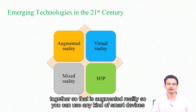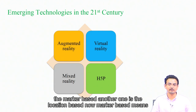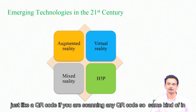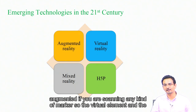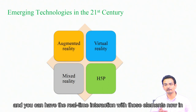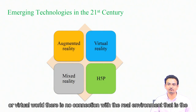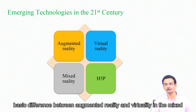You can use any kind of smart device for augmented reality. Augmented reality is basically of two types: one is marker-based and another one is location-based. Marker-based means just like a QR code — if you are scanning any kind of marker, the virtual element and the 3D simulation will appear on your screen and then you can have real-time interaction with those elements. In virtual reality, it is basically creating a total fictional or virtual world — there is no connection with the real environment. That is the basic difference between augmented reality and virtual reality.